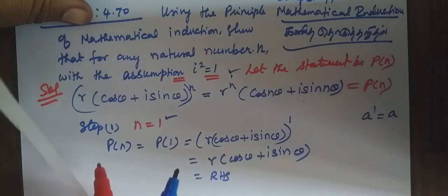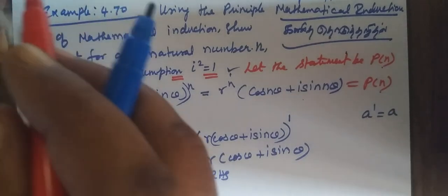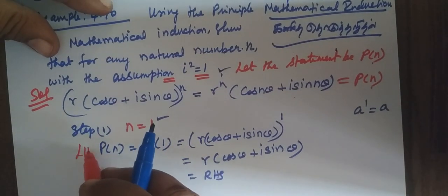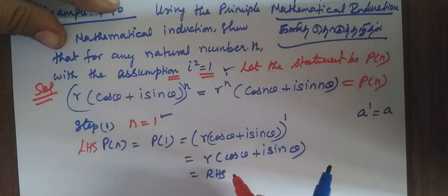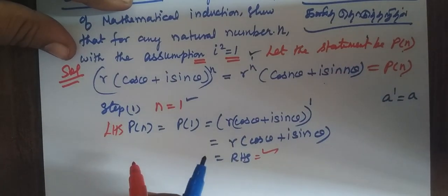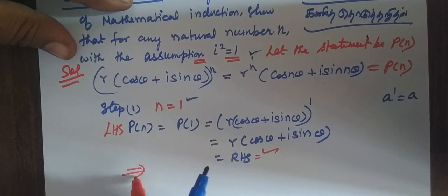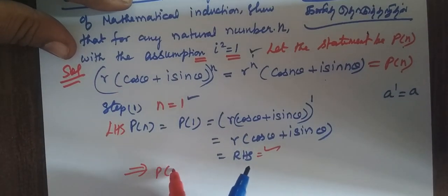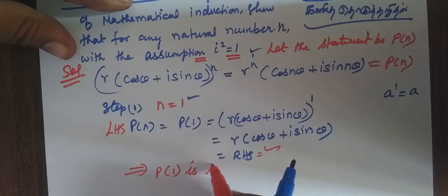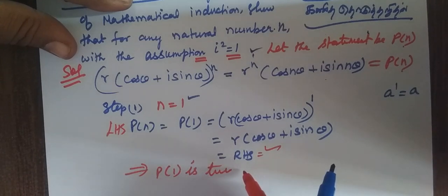We have considered the LHS and showed it equals the RHS. This implies P of 1 is true. So in Step 1, P of 1 is true.